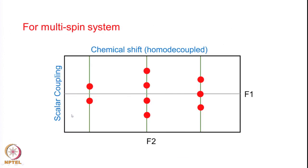You can extend this calculation to more complex spin systems. With three coupled spins you will see a doublet of a doublet, or a triplet, depending upon the nature of the spin system. Different fine structures appear along F1, and this is what helps measure coupling constants in an accurate manner.